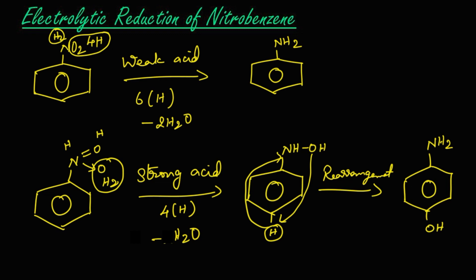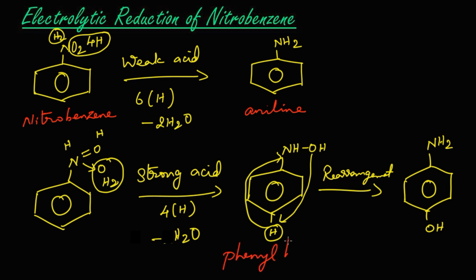Let's write the names for these structures. This is nitrobenzene, which on electrolytic reduction in presence of weak acid gives aniline as the product. And here, this is nitrobenzene, which on electrolytic reduction in presence of strong acid first gives phenylhydroxylamine.